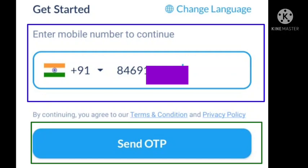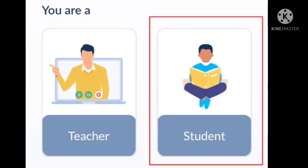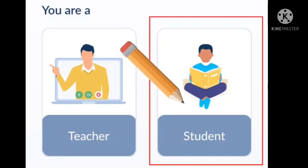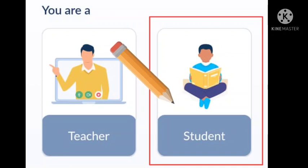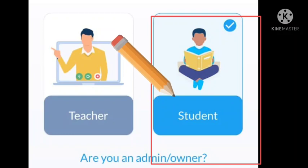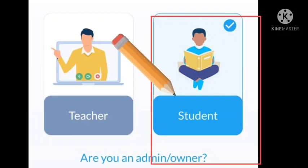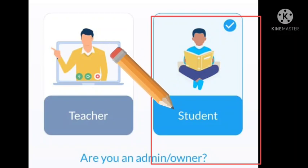After the OTP step, you will move to the next step where it asks: are you a Teacher or a Student? You will click on the Student button. As you click on Student, you will select it and the Student button will be highlighted.